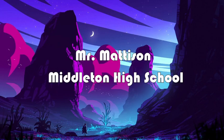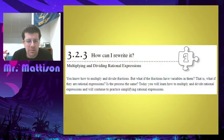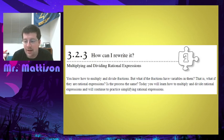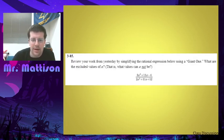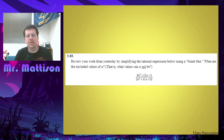Alright guys, welcome to Elder 2. This is 3.2.3 and we're going to be talking about ways that we can rewrite and then reduce rationals after we've multiplied and divided them. To start off, we're going to take a look at a problem like this.